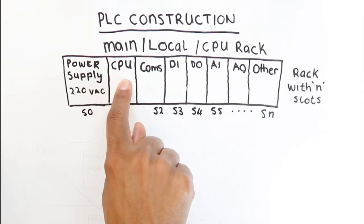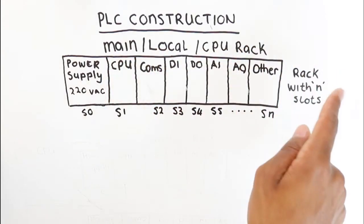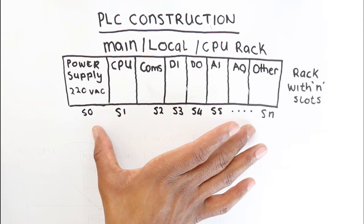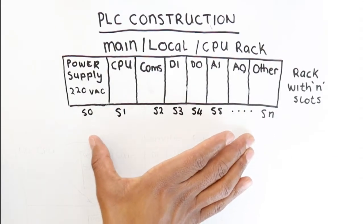The rack that has the CPU is usually called the main local or CPU rack, and this is the first rack that you get on your PLC construction. This is where everything begins.